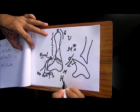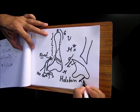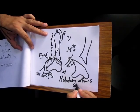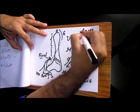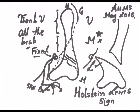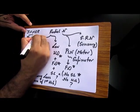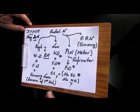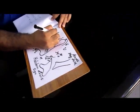And this presentation is called as the Holstein-Lewis sign. So, this is AIIMS May and this is JIPMER May 2016. Thank you very much. All the best.